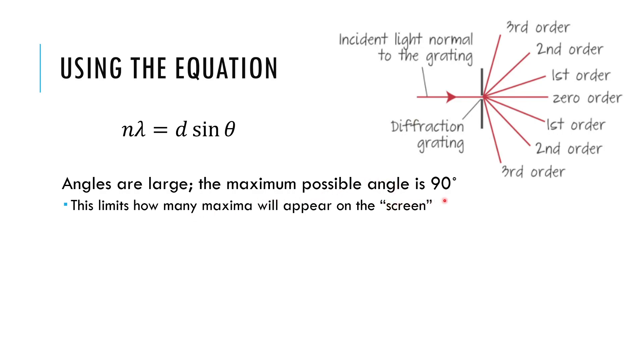One question the IB loves to ask about is how many maxima will you see? Because these angles are big, you can look at this picture here and imagine if it's spreading out like this. You won't get a fourth order maximum, like in this setup. It would have to go like this, maybe, to get to that fourth order. And you can't diffract more than 90 degrees or else you're not going through the diffraction grating anymore. So because the angles are so big, there is like a limit to how many of these bright spots you're going to see.